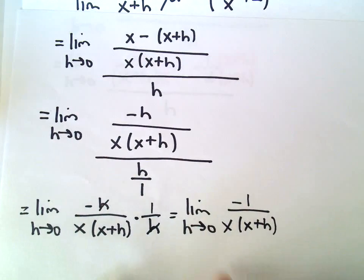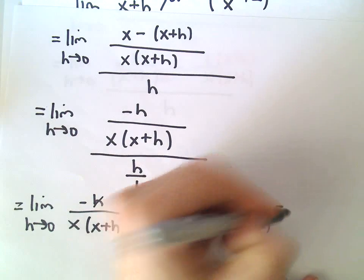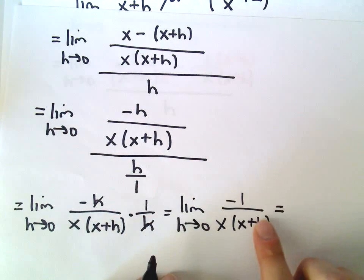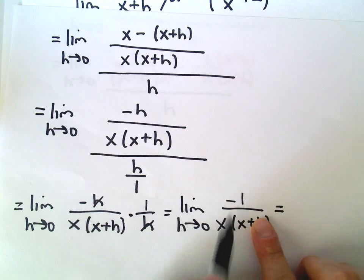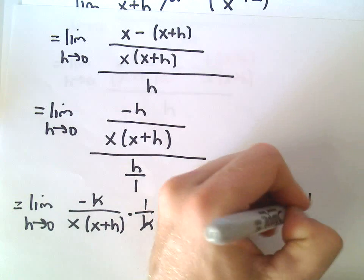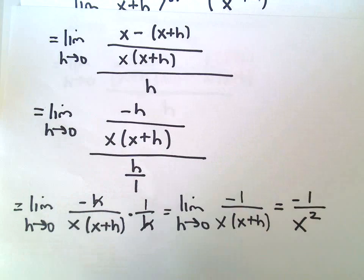We're left with the limit as h approaches 0 of negative 1 over x times x plus h. Now we can substitute h equals 0, giving us negative 1 over x times x, or negative 1 over x squared.